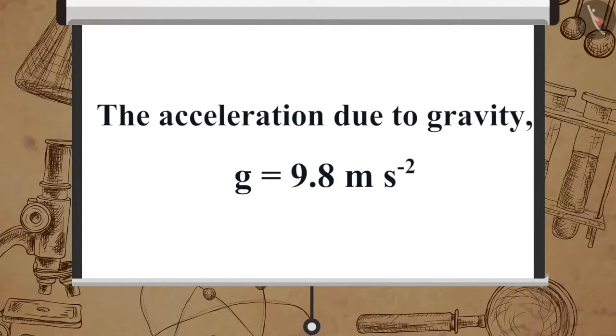Therefore, the acceleration due to gravity g is equal to 9.8 meter per second square.